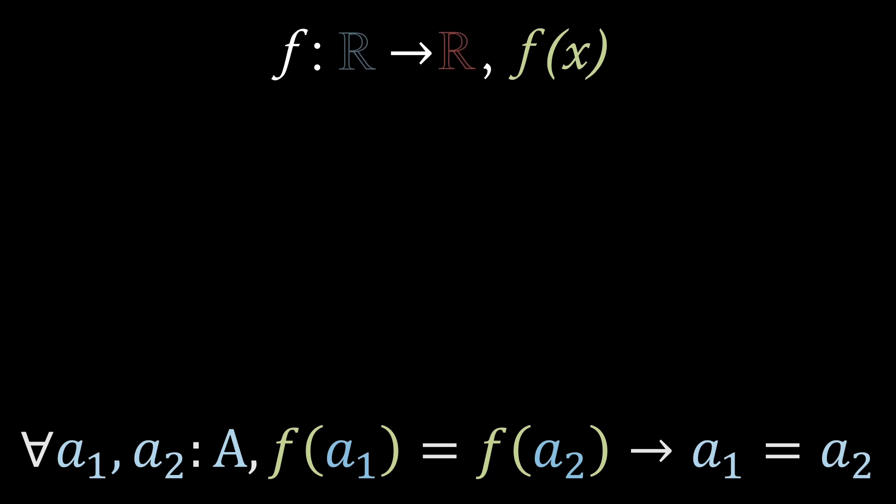Right, so going back to our Cartesian plane, if we imagine a curve like this, aka f of x equals x cubed, which we can see is injective, because taking any value of our codomain, there's only one value on our domain, which will map to it using the function rule.